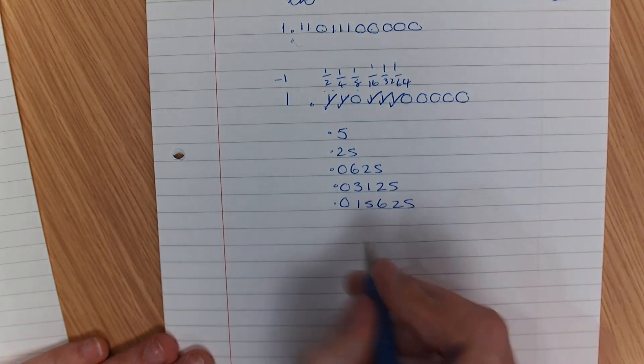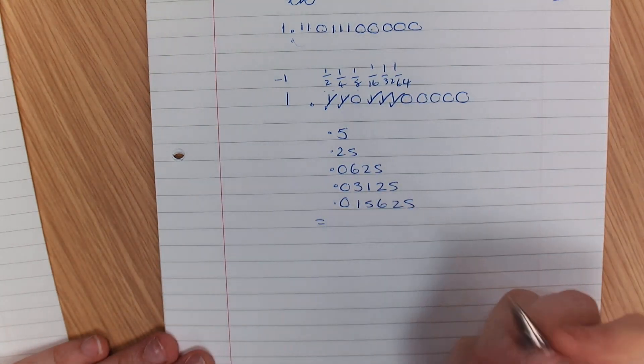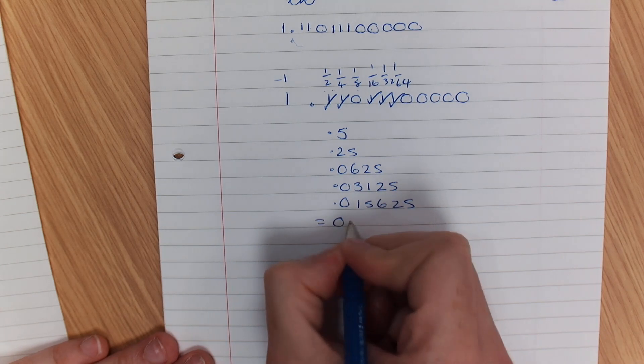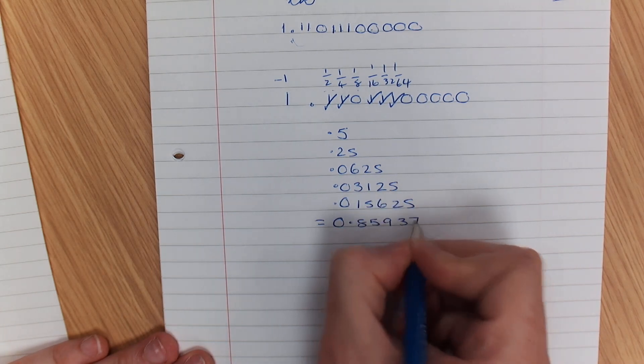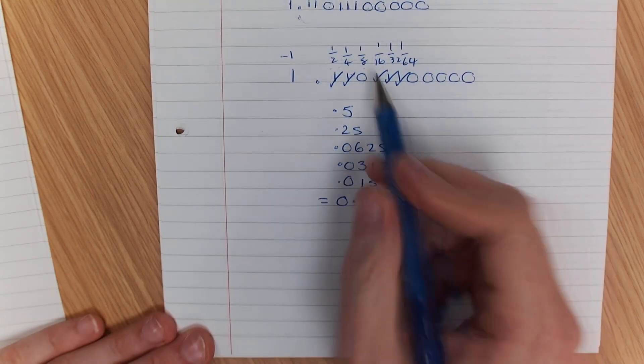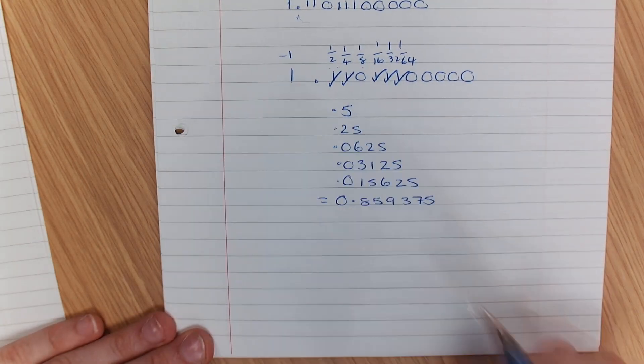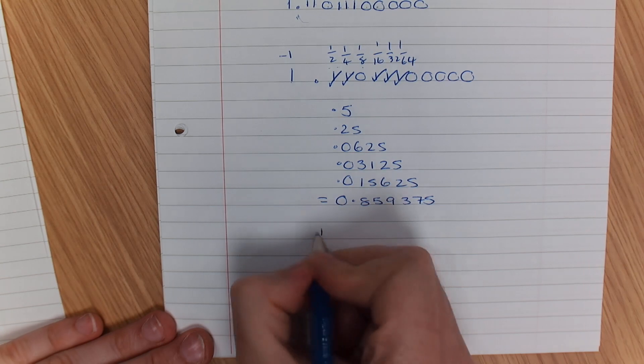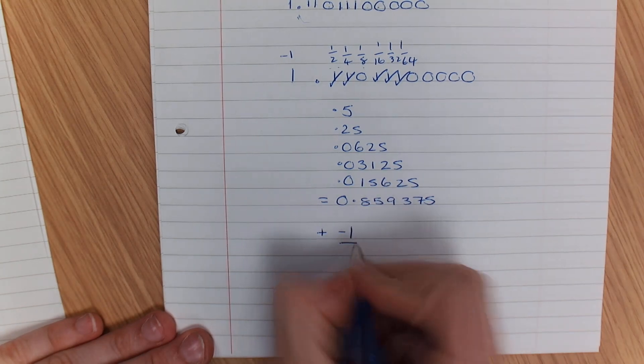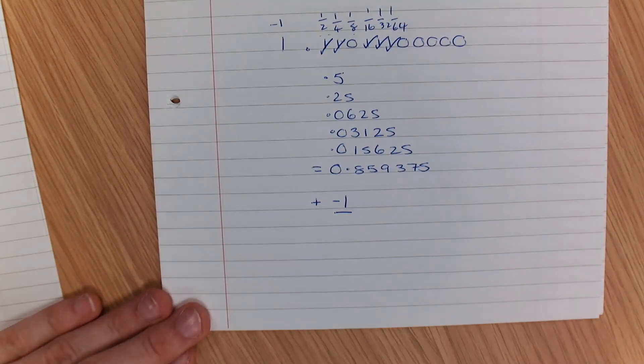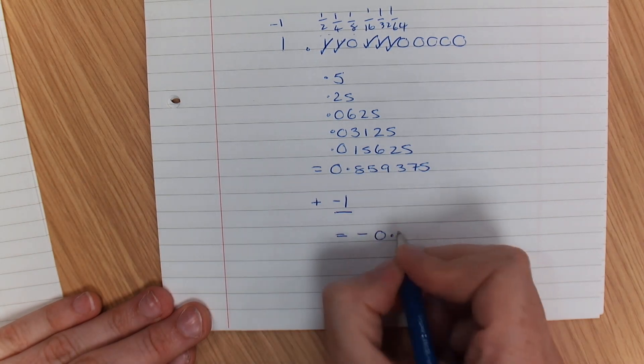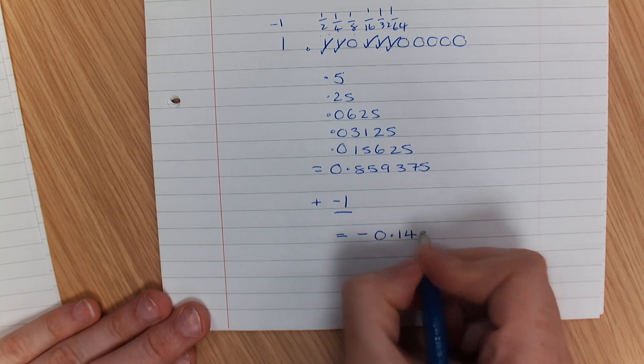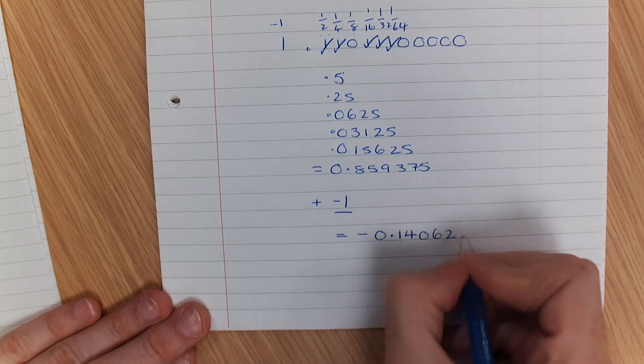Now when you add all of those together, that is equal to 0.859375. But then you've got to add it to the minus 1, so we're going to plus it to minus 1, and you end up with the value minus 0.140625.